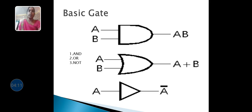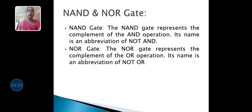Next, we discuss the basic gates: AND and NOT. The AND gate can be represented in the form of multiplication. The NOT gate is represented in the form of complementary — that means if we give a true input, it produces a false output. Next are NAND and NOR gates. NAND and NOR gates are represented as universal gates. The NAND gate represents the complement of the AND operation. Its name is an abbreviation of NOT AND.